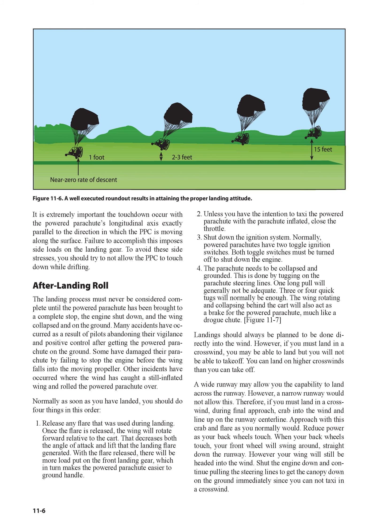Figure 11-7: Landings should always be planned to be done directly into the wind. However, if you must land in a crosswind, you may be able to land but you will not be able to take off. You can land on higher crosswinds than you can take off. During final approach in a crosswind, crab into the wind and line up on the runway centerline. Approach with this crab and flare as you normally would. Reduce power as your back wheels touch. When your back wheels touch, your front wheel will swing around straight down the runway; however, your wing will still be headed into the wind. Shut the engine down and continue pulling the steering lines to get the canopy on the ground immediately, since you cannot taxi in a crosswind.